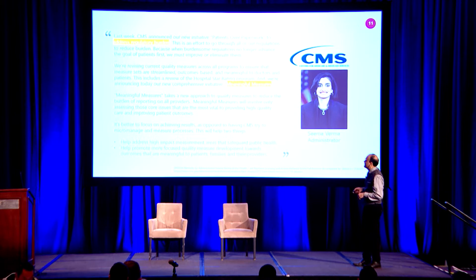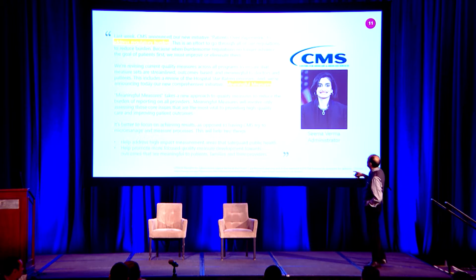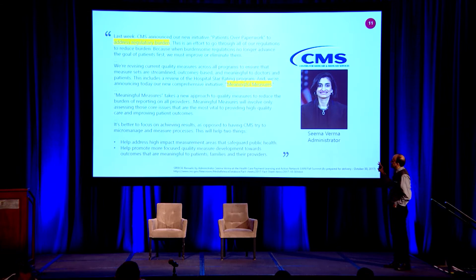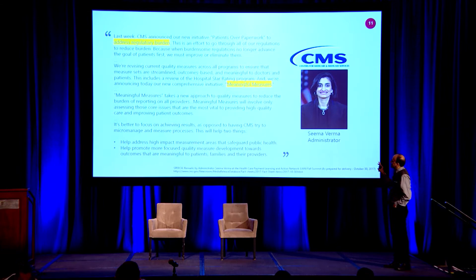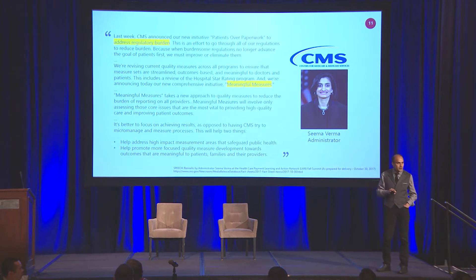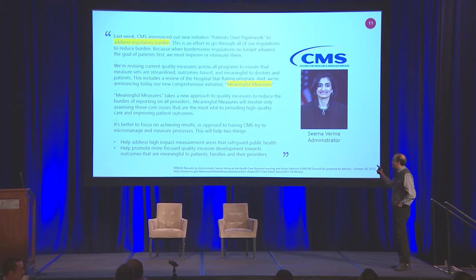Last week, Seema announced 'patients over paperwork' — an effort to go through all regulations to reduce burden. She's talking about reviewing the Hospital Star Ratings Program and announcing a comprehensive initiative called Meaningful Measures. She talks about taking a new approach to quality measures to reduce burden of reporting. That burden occurs because many of us — as we just agreed — are doing this for regulatory purposes. So are we saying we're removing regulatory requirements and that's why the burden decreases, or is it something else? Let's question that a little bit more.